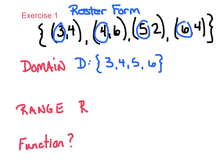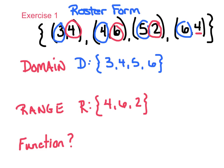My range — remember — are my y values. So I'm just going to list those out: 4, 6, 2, and 4. Notice I'm not going to say the 4 twice, so the range is {4, 6, 2} — I don't need to repeat that 4.